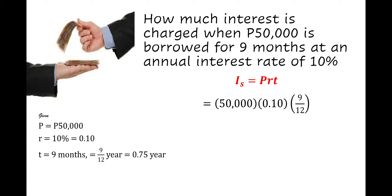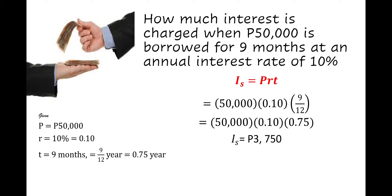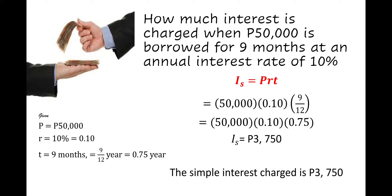Using the formula simple interest = P × r × t, where principal is 50,000, rate is 0.10, and time is 9/12 = 0.75, we get: 50,000 × 0.10 × 0.75 = 3,750 pesos. Therefore, the simple interest charged is 3,750 pesos.